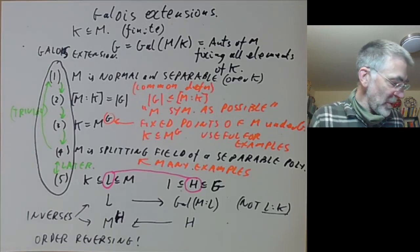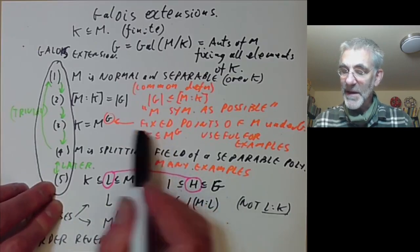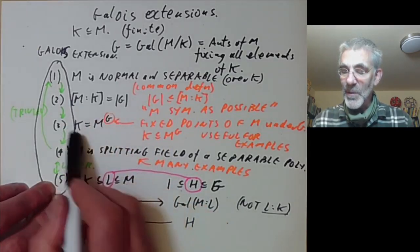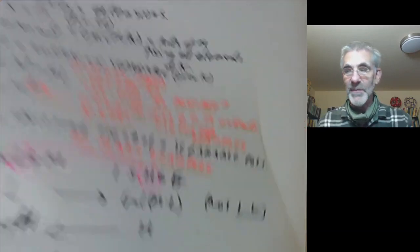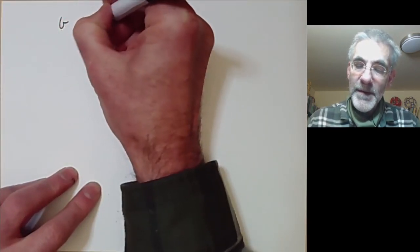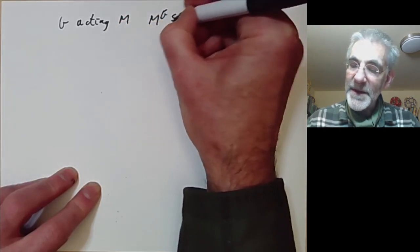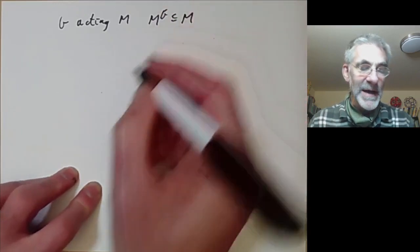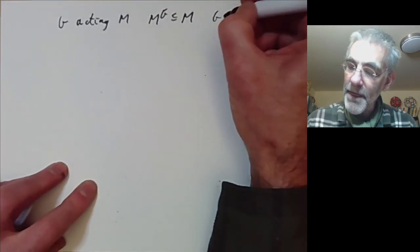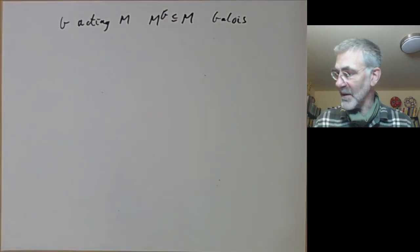Before proving the equivalences, let's give the examples we promised using condition 3. If a finite group G acts on a field M, then the extension M^G ⊆ M is always Galois. Let's use this to give some explicit examples.